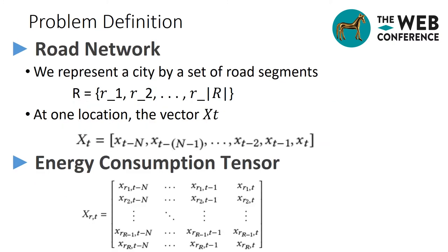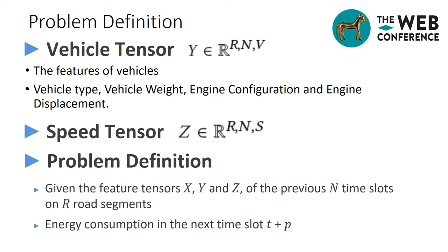To define our problem, we represent a city by a graph, including a set of road segments R. And at one location, the energy consumption can be represented by the vector X, which is a sequence of energy consumption within historical time slots. As the energy consumption at one location can be impacted by the traffic condition in nearby and faraway locations, we then designed a three-dimensional tensor X for all road segments and all time slots, recording energy consumption data for each road segment in a road network over time. The features of vehicles are recorded also in a three-dimensional tensor Y, representing the features V of vehicles for all road segments over N time slots. The vehicle features include vehicle type, vehicle weight, engine configuration, and engine displacement.